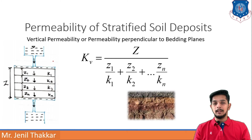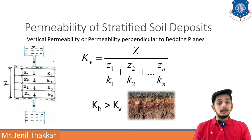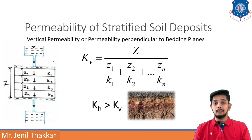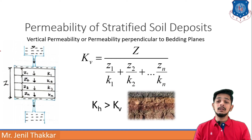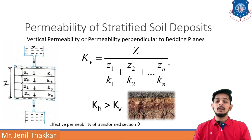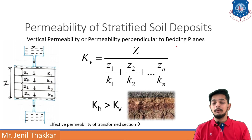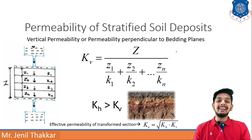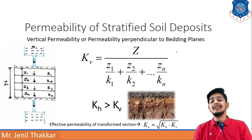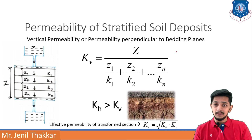kh is always greater than kv because horizontal permeability is always higher than vertical permeability, since resistance is greater in the vertical direction. Effective permeability can also be found using both: ke = √(kh × kv). In numerical problems, effective permeability is also used.